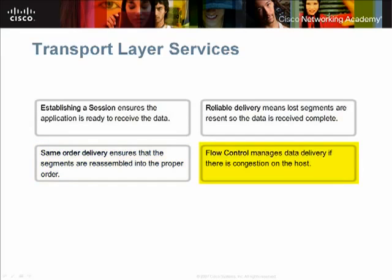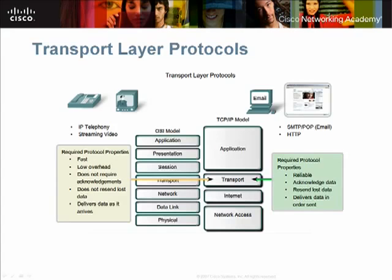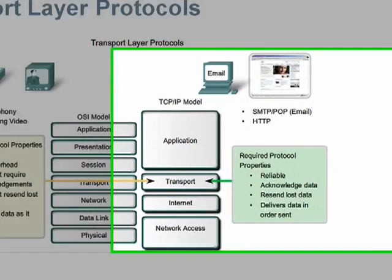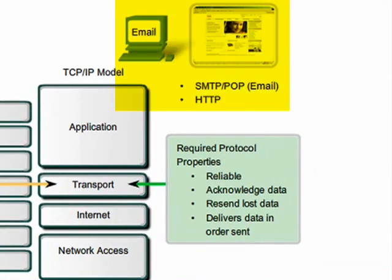Flow control ensures the sending and receiving devices are communicating at a mutually agreed upon rate. The two most common transport layer protocols of the TCP/IP protocol suite are Transmission Control Protocol, or TCP, and User Datagram Protocol, also called UDP. Data such as email and web pages require that all of the data sent arrive at the destination in order to be useful. Any missing data could cause a corrupt communication that is either incomplete or unreadable.